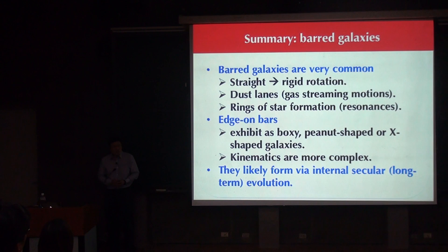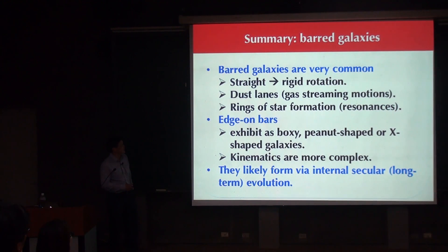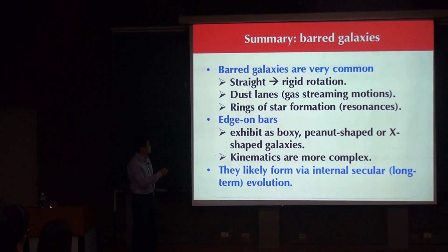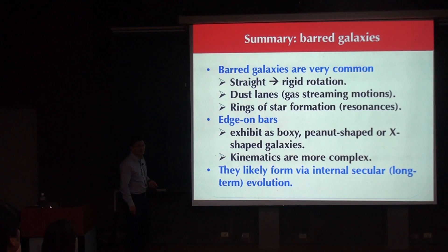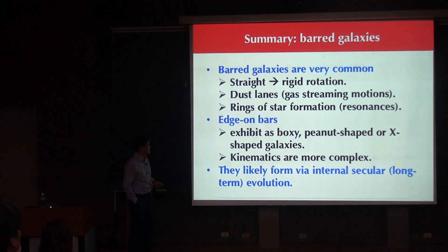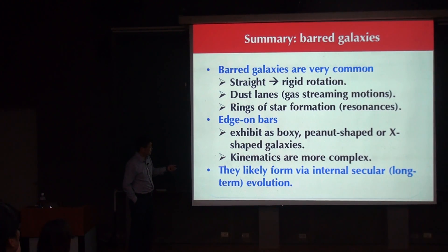Let me briefly summarize what is relevant for our discussion of bar galaxies. Bar galaxies are very common — two-thirds of spirals are barred — and they often show straight bars, meaning they rotate with the same angular velocity. You have dust lanes associated with gas-streaming motions, and you often see rings of star formation, showing that bars are really important in driving star formation. It's more difficult to identify edge-on bars, but in terms of shape they often appear boxy, peanut-shaped, or with X-shaped structures.